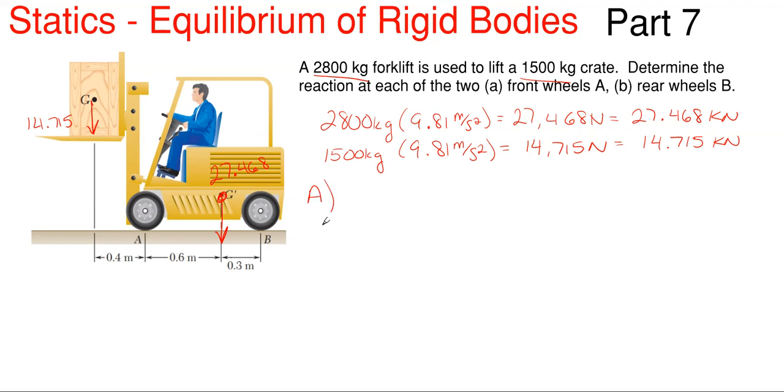Part A says determine the reaction at the front wheel. We can imagine these two wheels as roller supports because rollers are just essentially wheels and that's what the forklift is running on. I'm going to assume that we have our reaction of Ay going upward and our reaction of By going upward, because otherwise the forklift is floating or tipping over. So we're going to determine Ay first at the front wheels.